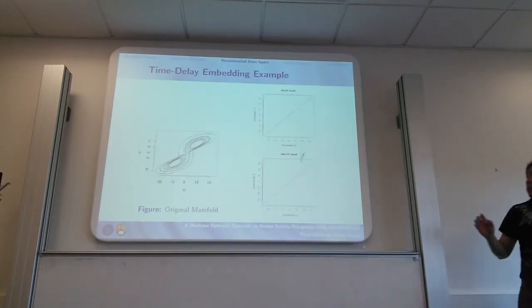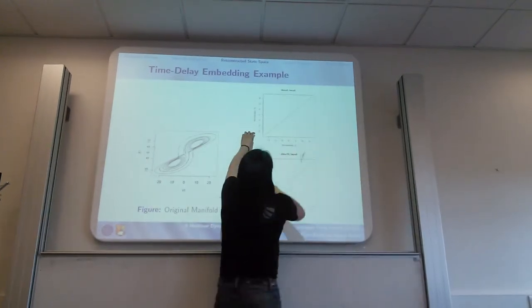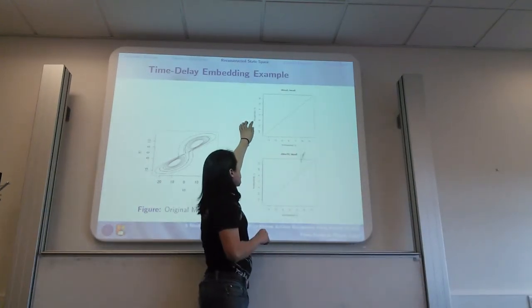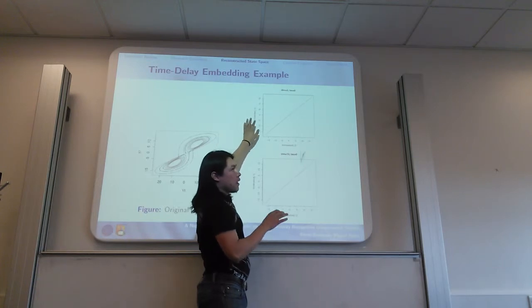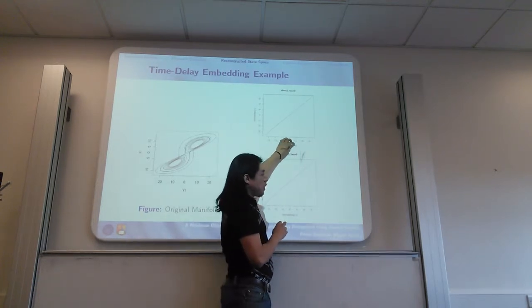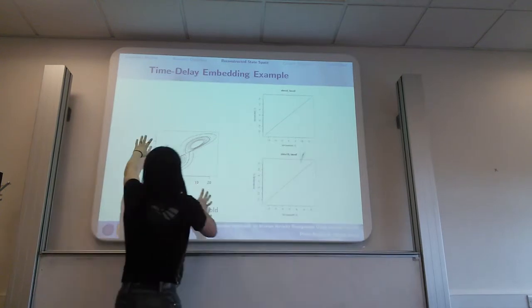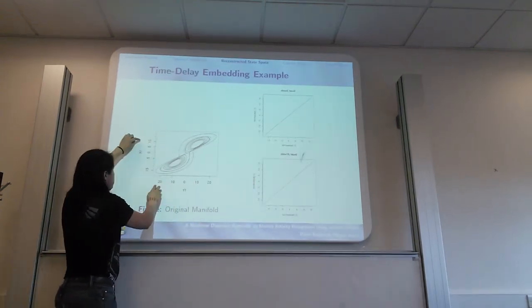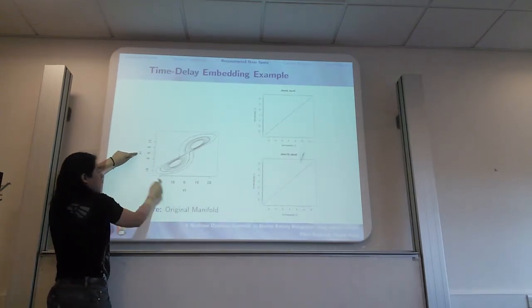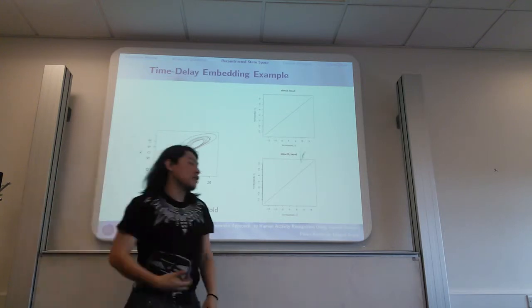Now by applying the Takens theorem, this is the first embedding delay and the second embedding delay, and this is the original manifold which comes from the x and y solution of the differential equations.